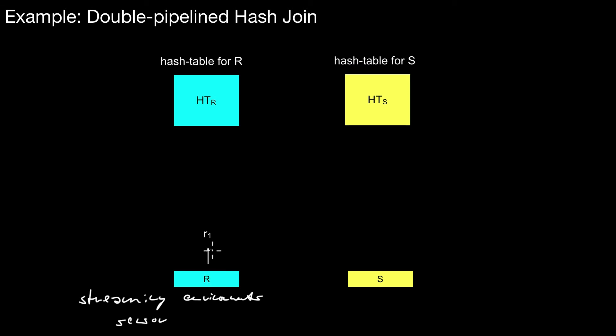In the beginning assume that both tables are empty and we start by drawing one of the input elements from input R. This tuple is called R1. We draw it from R and then we probe it against the other hash table. Of course this does not produce any result because the hash table is empty. However, after probing we also insert this tuple into the hash table of R.